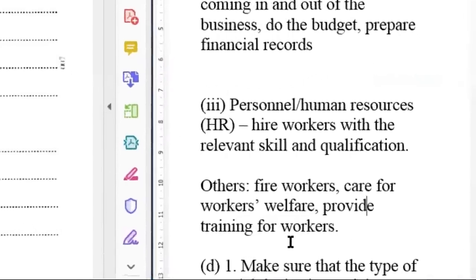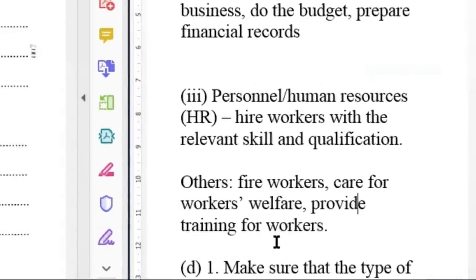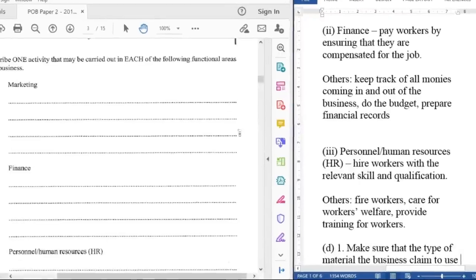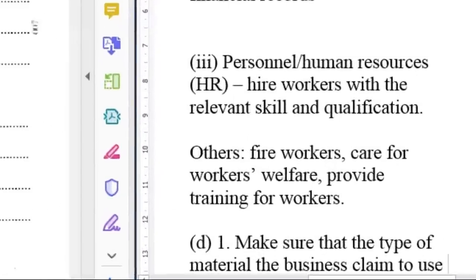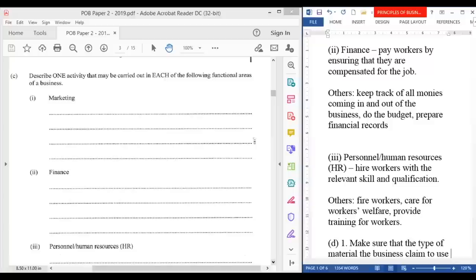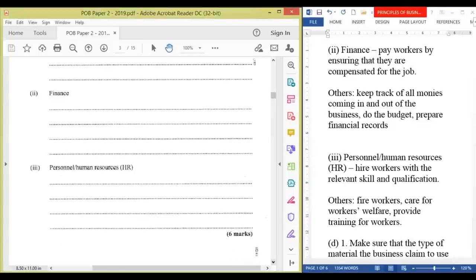Personnel or human resource hires workers with the relevant skill and qualifications. Other activities include fire workers, care for workers' welfare, and provide training for workers. Let's move on to the next question, which is D.